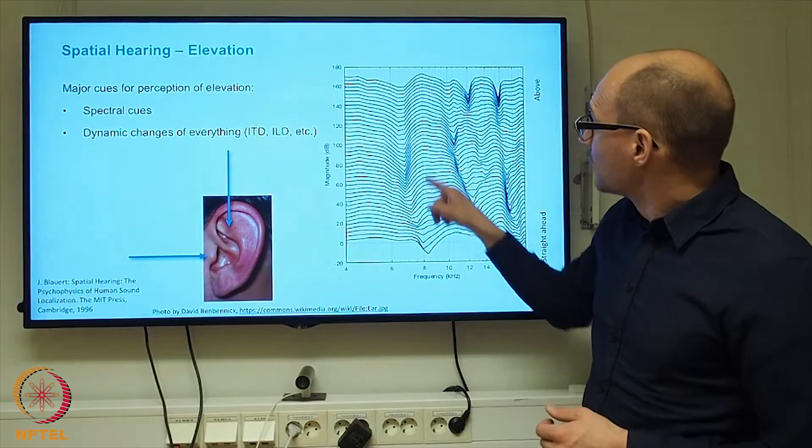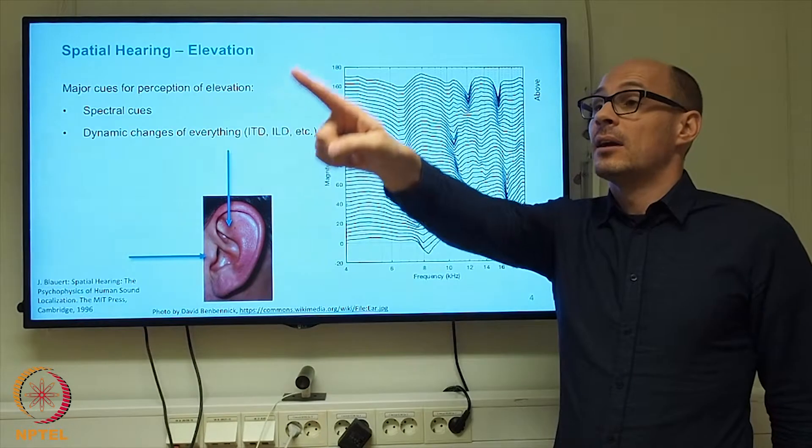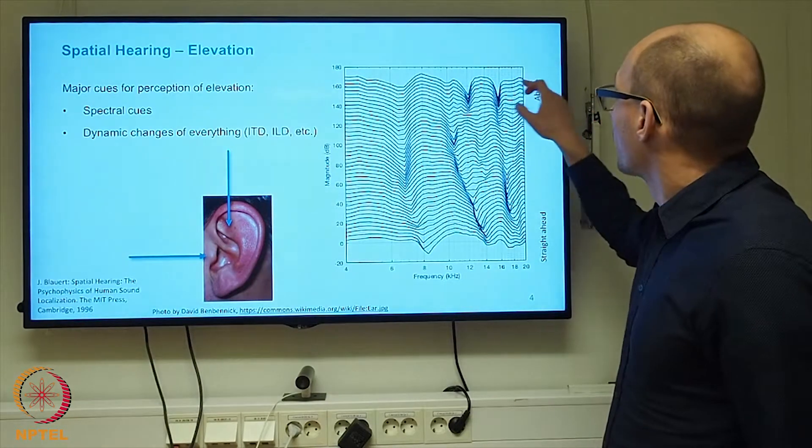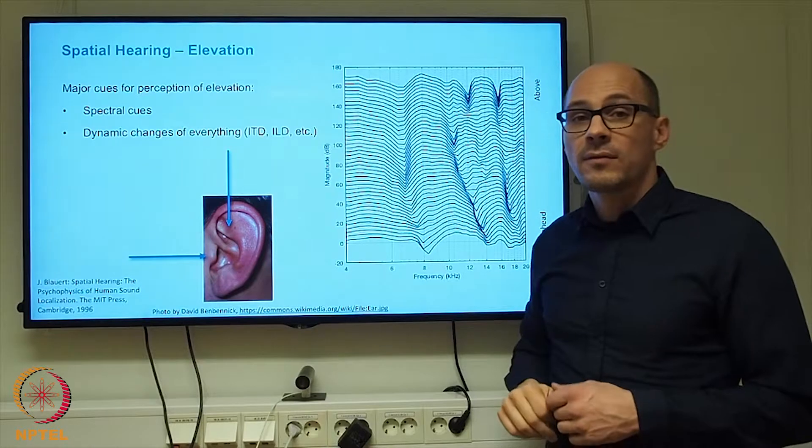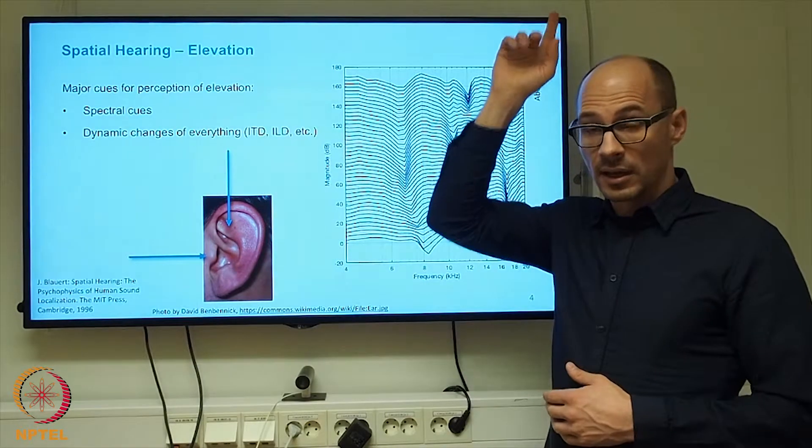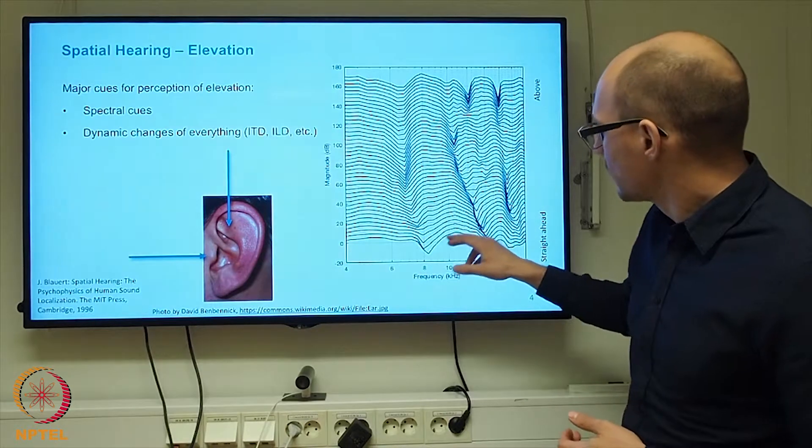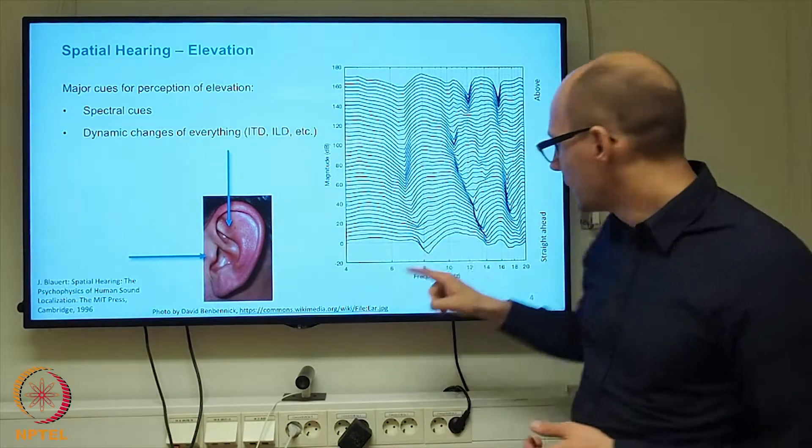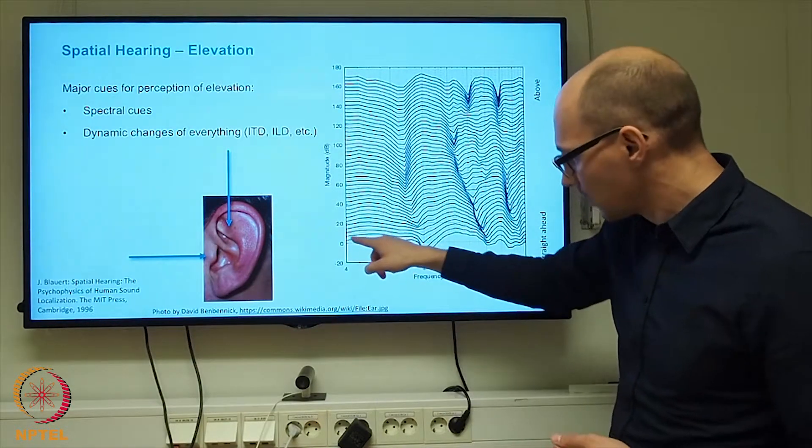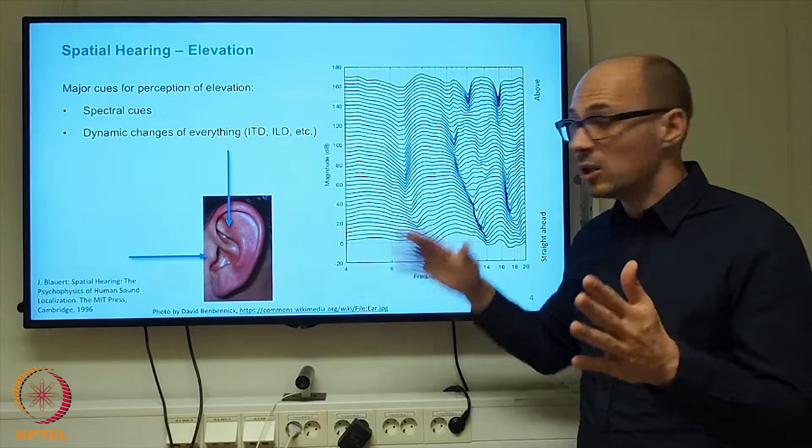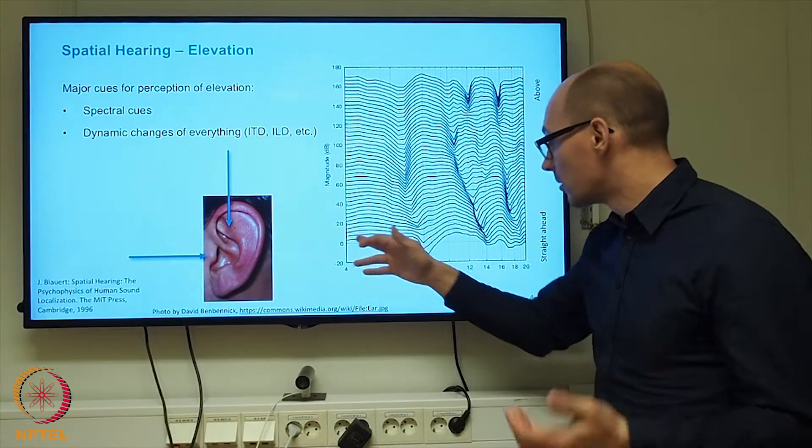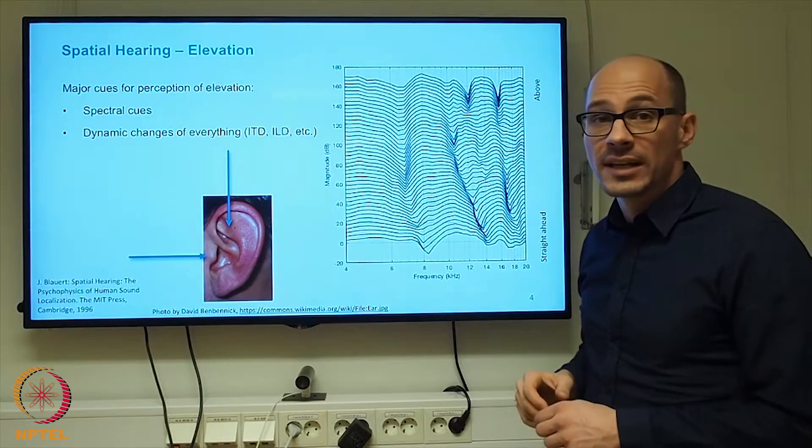As we are moving up on the plot, also the sound source moves up and the top graph will show the transfer path from a sound source straight above the listener. If we are changing the elevation of that sound source, first of all what we see is that this transfer curve is not flat, so some frequencies are boosted and other frequencies are attenuated.